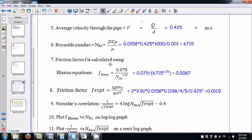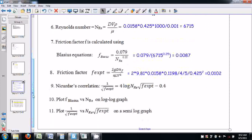D is the diameter of the pipe, V is the velocity, rho is the density of the fluid, and mu is the viscosity. We get 6715. Friction factor is calculated using the Blasius correlation: 0.079 by NRE power 0.25. Experimental friction factor can be found with the Hagen-Poiseuille equation.